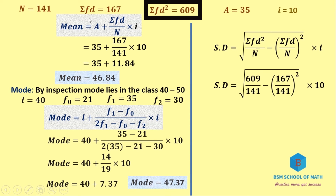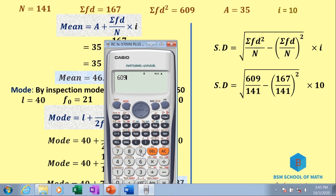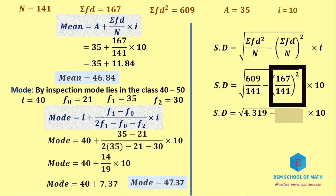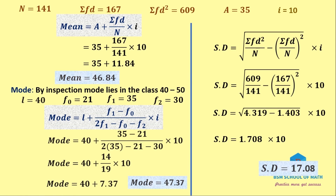For standard deviation: σ = I × √[(ΣFD² ÷ N) − (ΣFD ÷ N)²] = 10 × √[(609 ÷ 141) − (167 ÷ 141)²] = 10 × √[4.3191 − 1.4030] = 10 × √2.780 ÷ … = 10 × 1.708. Standard deviation σ = 17.08.